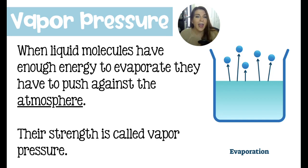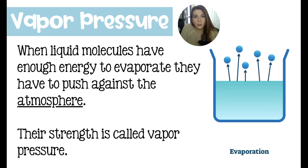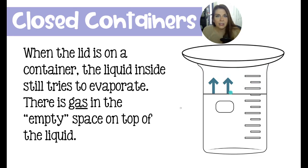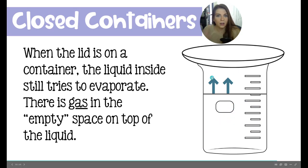When the liquid molecules have enough energy to evaporate, they push pressure against the atmosphere and are able to become a gas. The strength they have in pushing against the atmosphere is called their vapor pressure. When you have a closed container — like a beaker with a watch glass over top or a closed water bottle — the liquid particles inside will still try to evaporate. The empty pocket in the bottle or container will fill up with gas, a mixture of air and these particles pushing against their atmosphere.